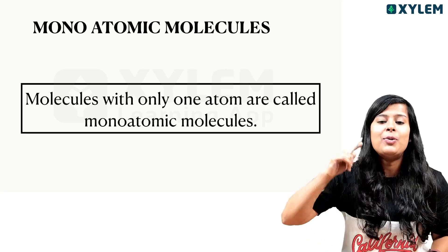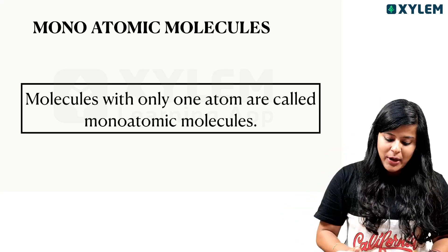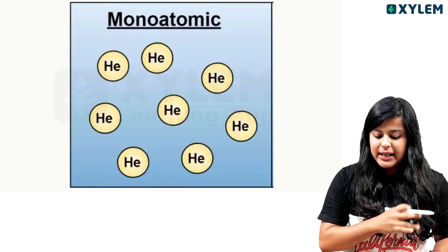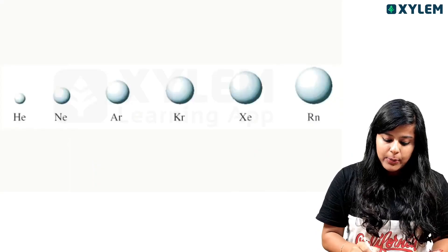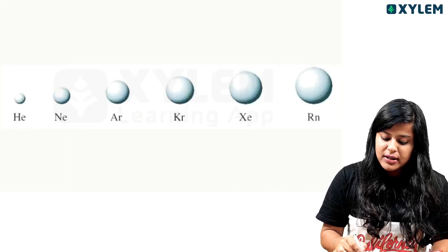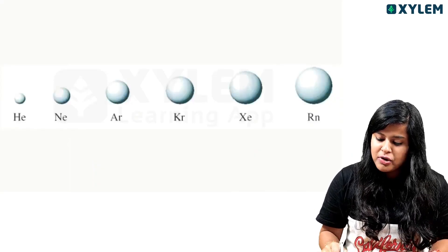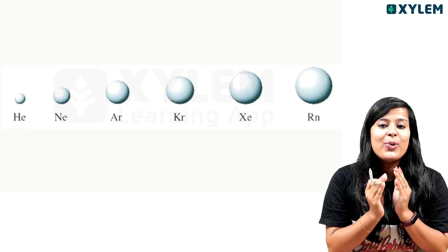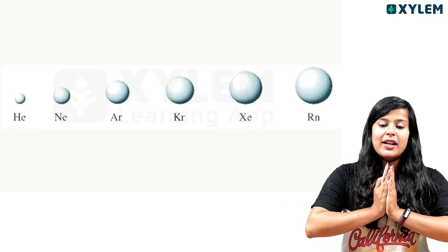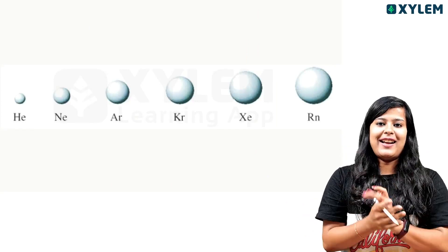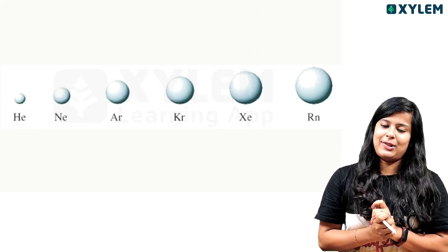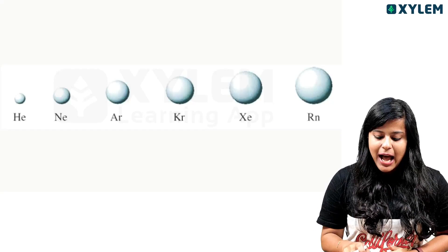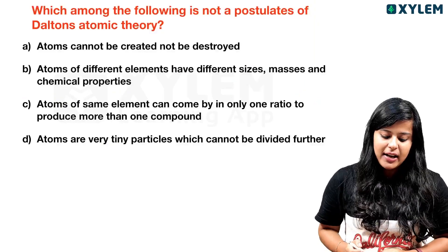So noble gases — helium, neon, argon, krypton, xenon, radon — are mono-atomic. The answer to this question is mono-atomic molecules.